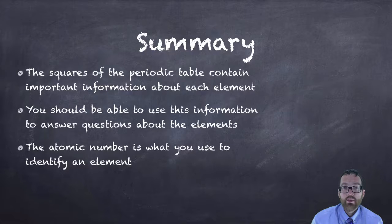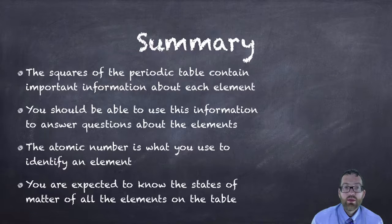The atomic number is what you use to identify an element. If you don't know its name, you go to table S, look up that atomic number and read over for its name. You're also expected to know the states of matter of all the elements on the table. This isn't on your reference table, your reference table will not be color coded, but it's not too hard to memorize the two liquids that you may be asked about and the several gases. If you have any questions, please let me know.